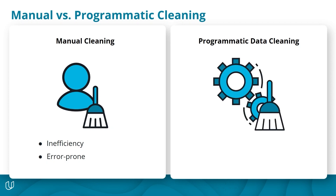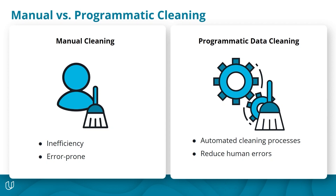On the other hand, programmatic data cleaning uses code to fix data quality issues. It allows for faster and more efficient handling of large datasets as the cleaning process can be automated and performed on a massive scale. It also ensures a consistent approach and reduces the risk of human error, which leads to more reliable and accurate results in the analysis. Programmatic cleaning also enables you to create reusable scripts or functions that can be applied to similar datasets or future cleaning tasks, making the process more transparent and allowing other researchers or team members to reproduce the cleaning steps and validate the results. Data wrangling is taking a tremendous amount of time for data professionals, so programmatic data cleaning is strongly preferred over the manual process.